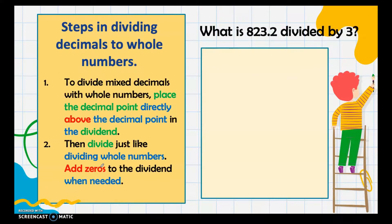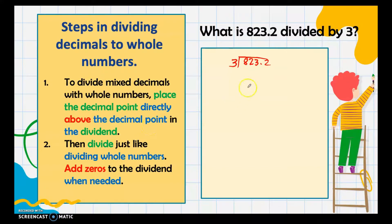Next is dividing a decimal by a whole number. Here is the example: 823.2 divided by 3. To divide a mixed decimal by a whole number, place the decimal point in the quotient directly above the decimal point in the dividend, then divide just like dividing whole numbers. So we begin dividing: 8 divided by 3 is 2, and 2 times 3 is 6.